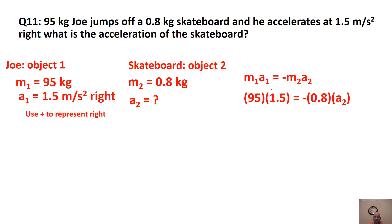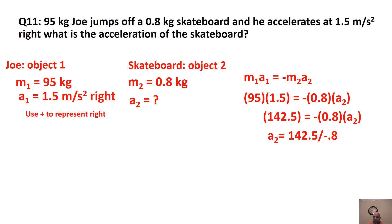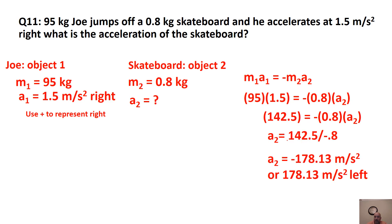Using M1·A1 = −M2·A2, plugging in: 95 × 1.5 = 142.5; then −0.8 × A2 = 142.5. Dividing both sides by −0.8, we get A2 = −178.13 meters per second squared. Since positive represented right, the negative means the skateboard accelerates to the left.